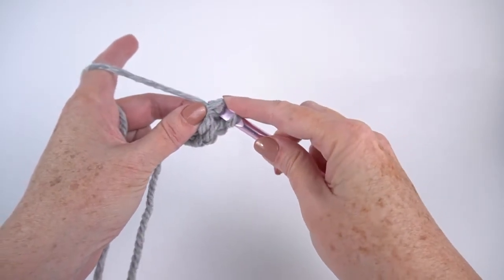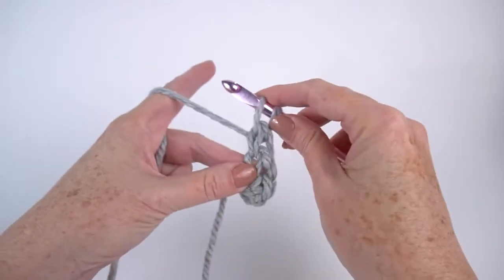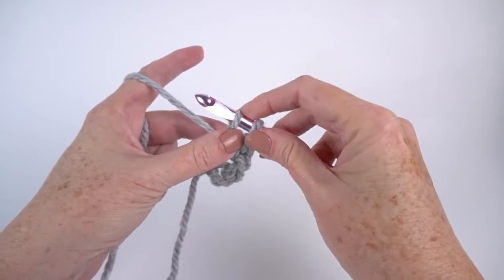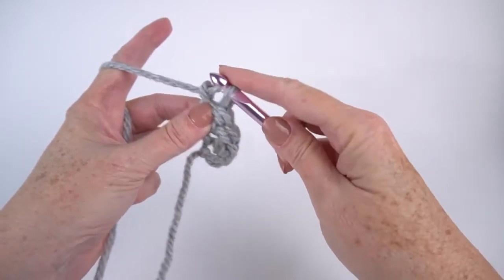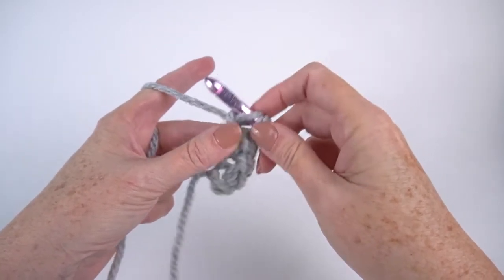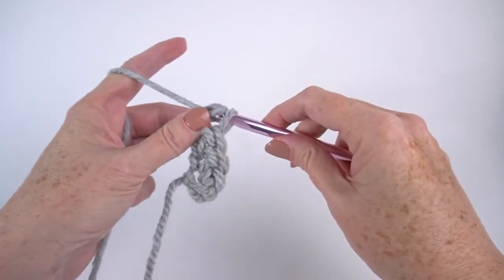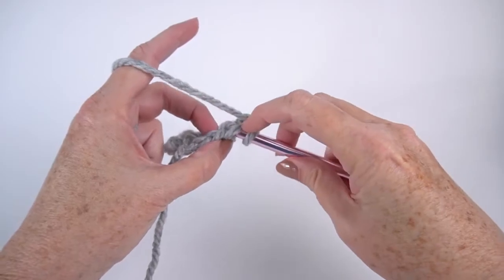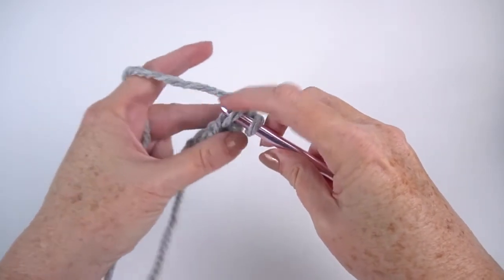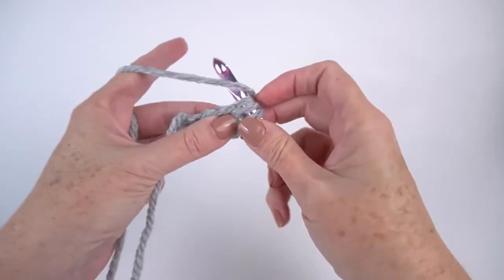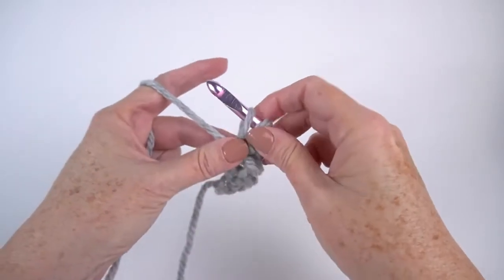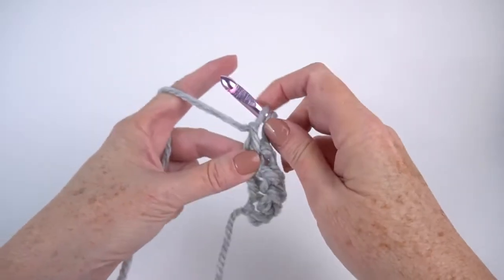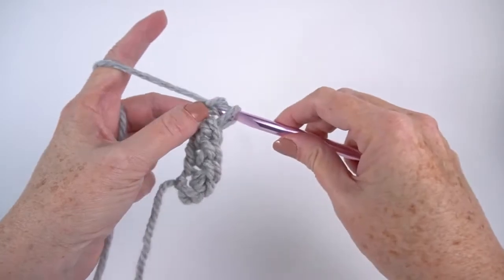Yarn over and draw it up. Two loops on your hook. Chain one. Still two loops on your hook. Yarn over and draw through two. Go to the next guy. Under those two legs. Yarn over, draw the loop. Chain one. Yarn over, draw through two, which finishes your single.